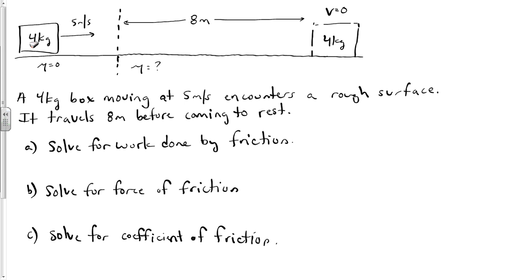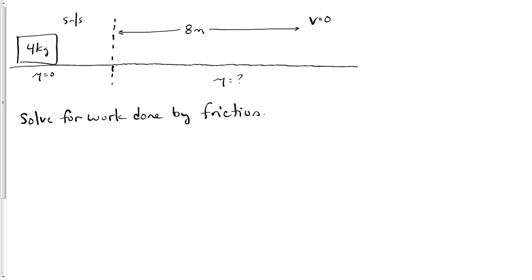When it gets to the end of its motion, the kinetic energy is zero. So we can solve for the work done by friction and then from there solve for the rest. How much work is done by friction? As this object starts to move, it hits this and slows down, and friction is doing work on it until it reaches a velocity of zero.